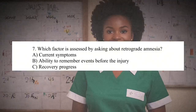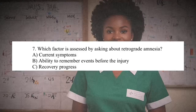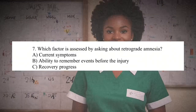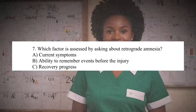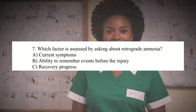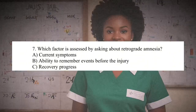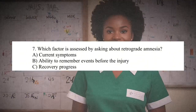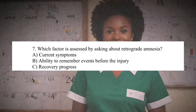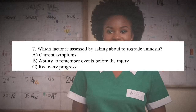Question 7: Which factor is assessed by asking about retrograde amnesia? A. Current symptoms. B. Ability to remember events before the injury. C. Recovery progress. Answer: B. Ability to remember events before the injury. Rationale: Retrograde amnesia refers to the ability to remember events that occurred before the injury.